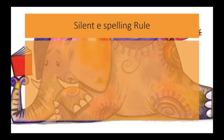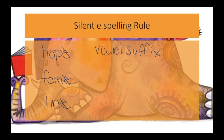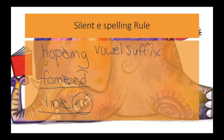The next rule is the rule for the silent E spelling of words. In words like hope, fame, and line, we need to remember that when we have that silent E in order to add a vowel suffix, we must lose the E. For example: hope to hoping, fame to famed, and line to liner. I still add an E to famed and liner, but it goes with the vowel suffix that I'm adding.